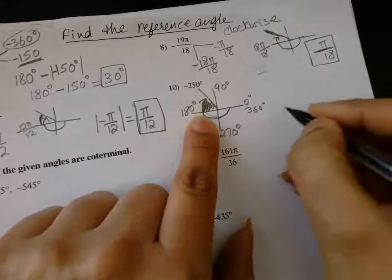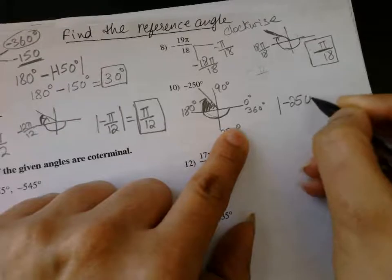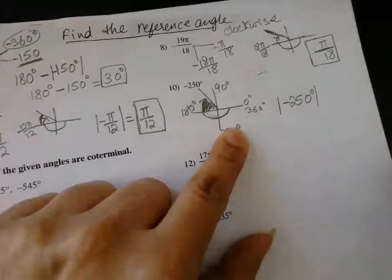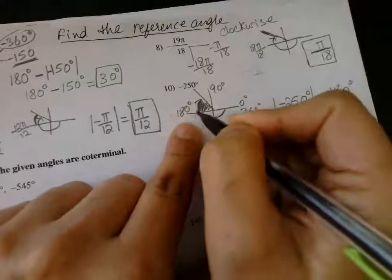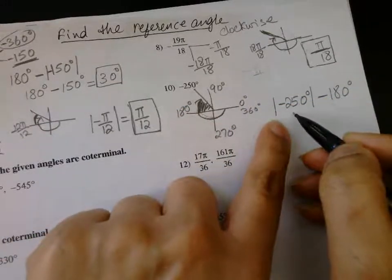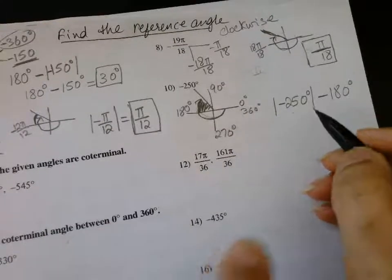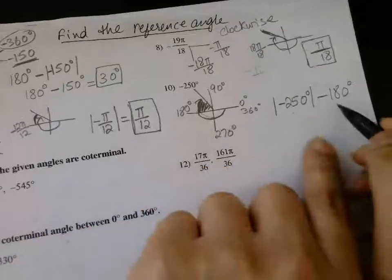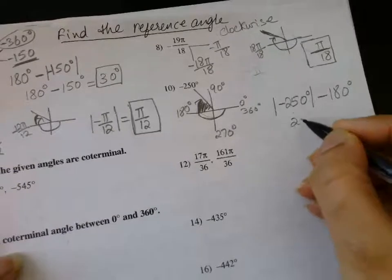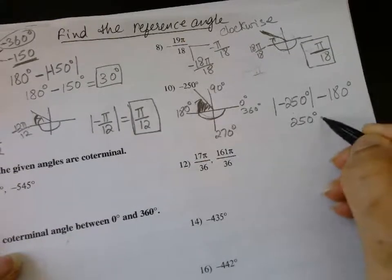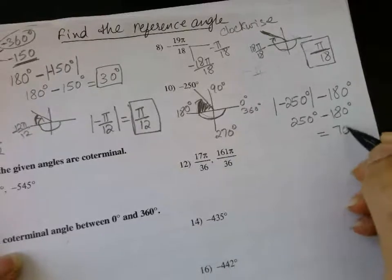To calculate it: take the absolute value of the given angle, 250°, minus 180°, because the given angle is less than 270°. If it were more than 270° we would have used 360° instead of 180°. So the absolute value of 250° minus 180° gives you 70°.